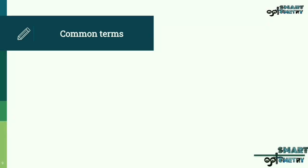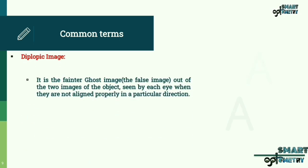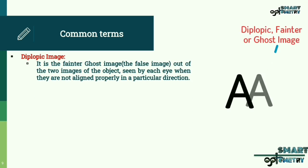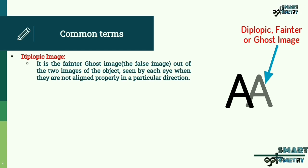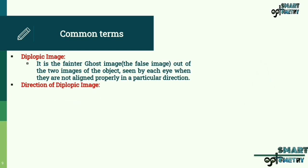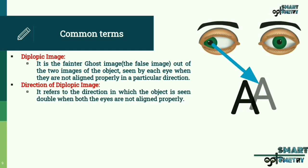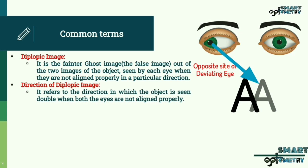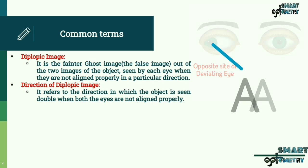Let us understand the common terms used in this presentation. The diplopic image is the fainter ghost image — that is, the false image — out of the two images of the object seen by each eye when they are not aligned properly in a particular direction. The direction of the diplopic image refers to the direction in which the object is seen double when both eyes are not aligned properly.